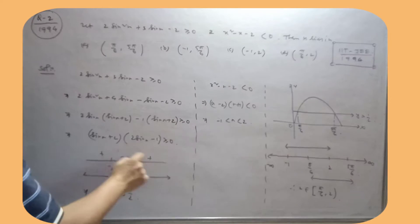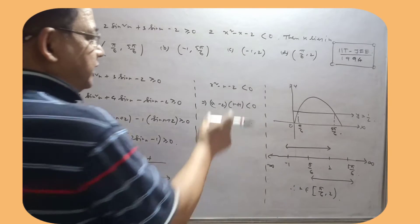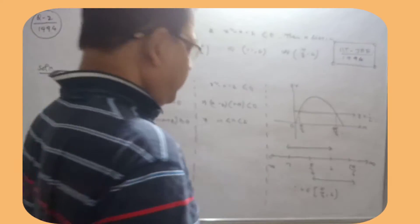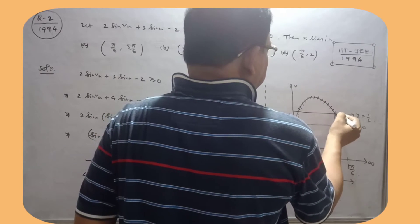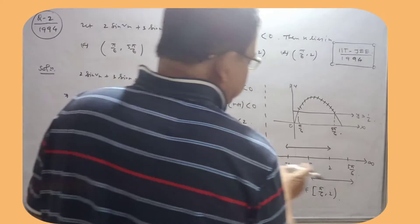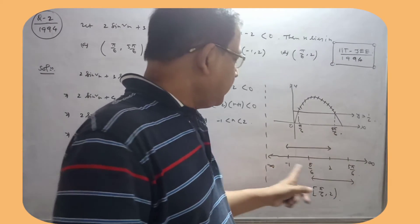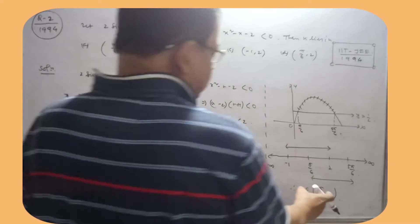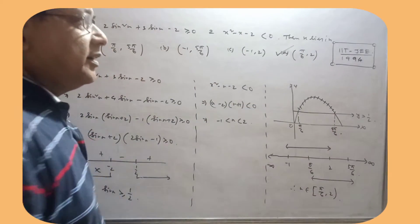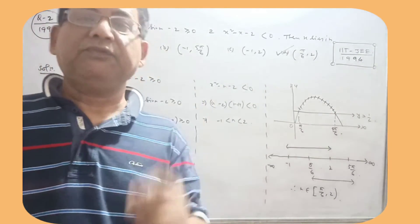इस equation को solve किया — number line में simply plot कर दिया: plus minus plus, a positive part. sin x का value minus 2 से छोटा नहीं हो सकता, तो उसे ignore करो। sin x ≥ 1/2 consider करो। x का value −1 से 2 के बीच में है। जब sin x ≥ 1/2 है, so this is π/6 से 5π/6 — यह part consider करना है। x को number line में plot करें: π/6 का value 3.14/6, so that is 2 से छोटा है, और 5π/6 — 2 से बड़ा है। −1 से 2, और π/6 से 5π/6 — दोनों का common value है। So that means that interval के लिए satisfy कर रहे हैं। यह 1994 का question है, बहुत अच्छा question है।